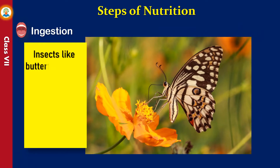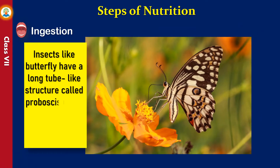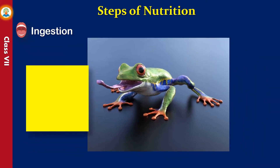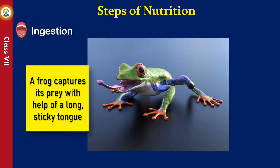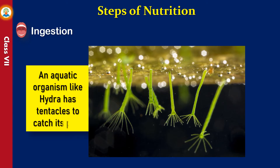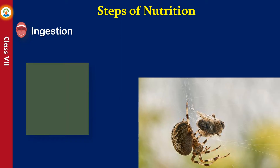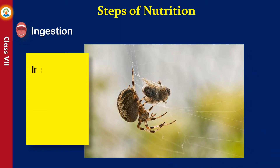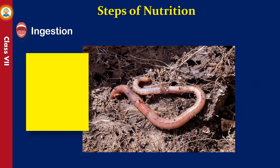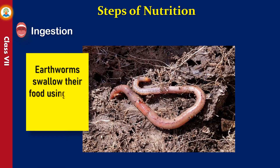Food insects like butterflies have a long tube-like structure called a proboscis, using which they suck the nectar of flowers. A frog captures its prey with the help of a long sticky tongue. An aquatic organism like hydra has tentacles to catch its prey. In spiders, the mode of ingestion is sucking after injecting venom into the prey. Earthworms swallow their food using their muscular pharynx.